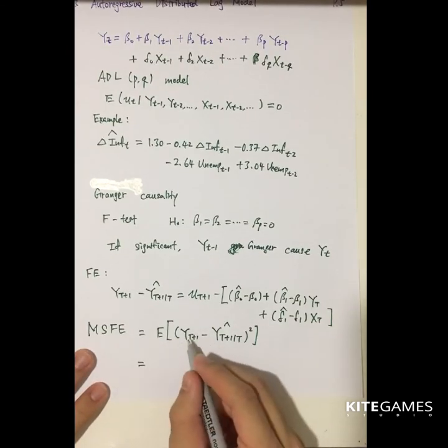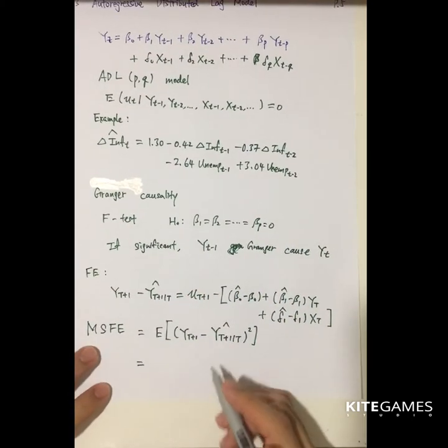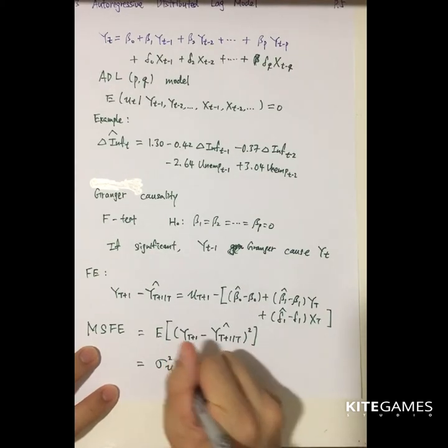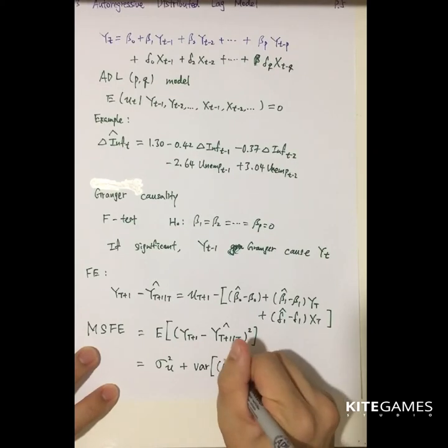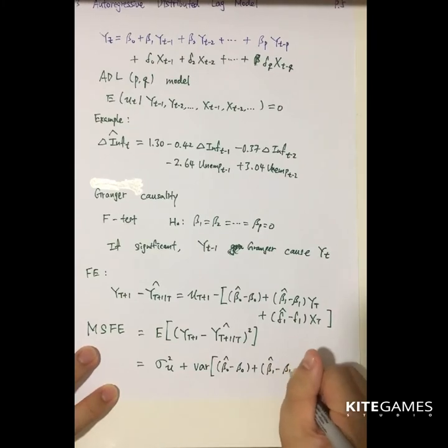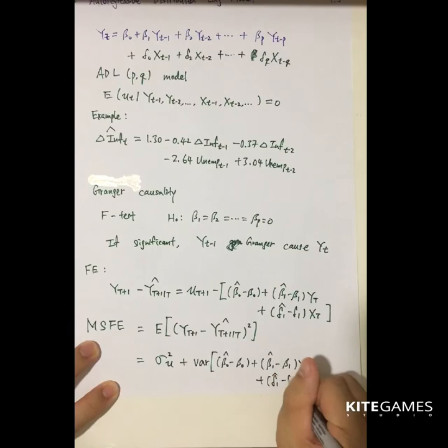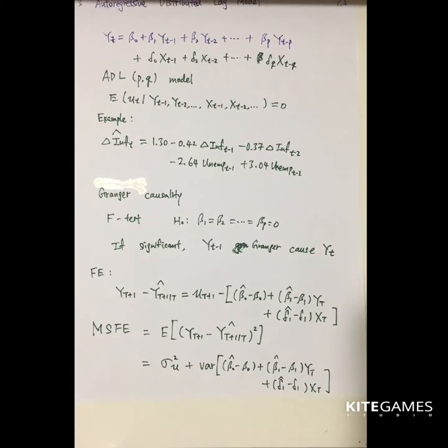Therefore, you can express this term, you can replace this term by the whole expression, and like that, the mean square forecast error will be equal to variance of the u plus the variance of the remaining one. The remaining will be beta 0 hat minus beta 0 plus beta 1 hat minus beta 1 times yt, plus delta 1 hat minus delta 1 times yt. So this is the mean square forecast error.